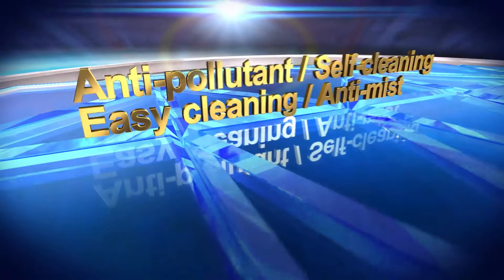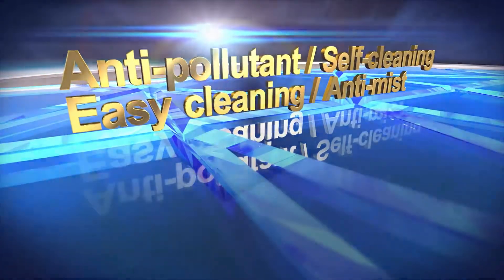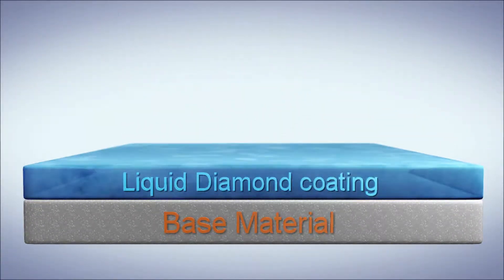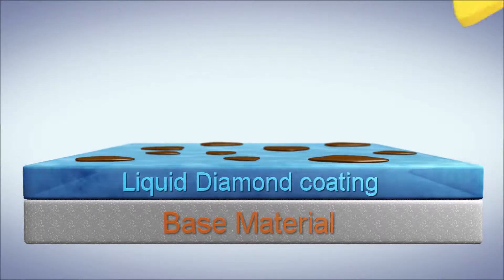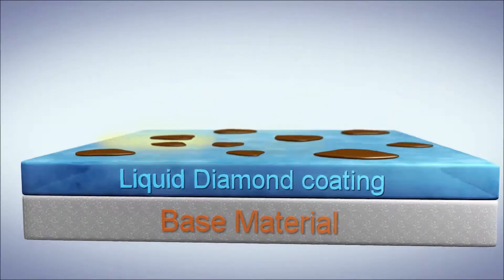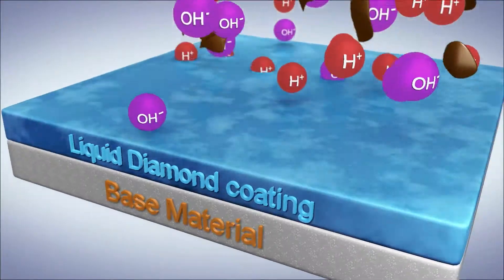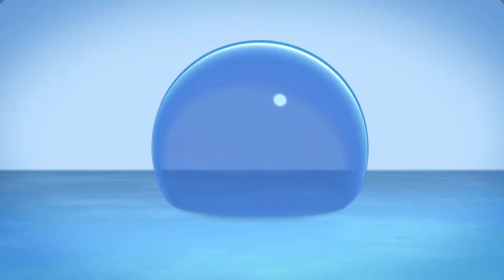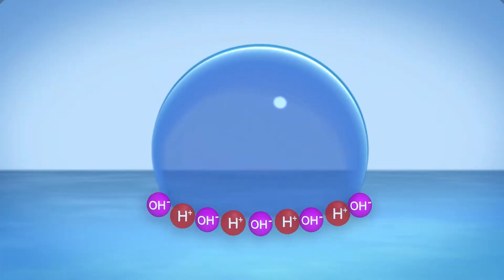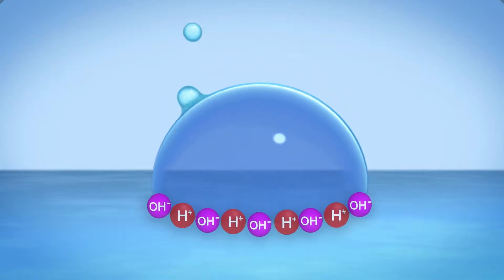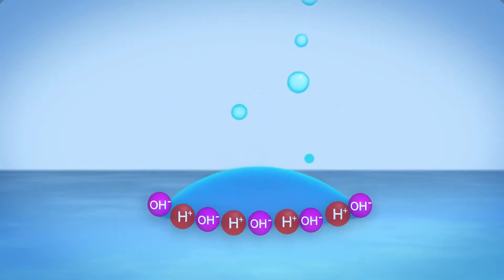Anti-pollutant, self-clean, easy cleaning, anti-mist: The Liquid Diamond coating will form hydroxide radicals which are very powerful in oxidation and decompose pollutants. Both hydroxide radicals and hydrogen ions will stop the formation of water droplets, preventing the formation of mist on the surface.